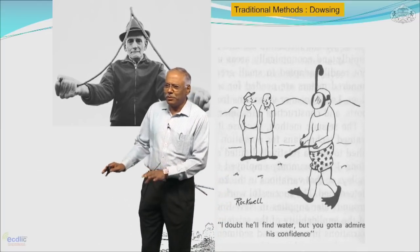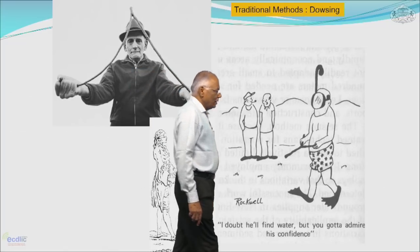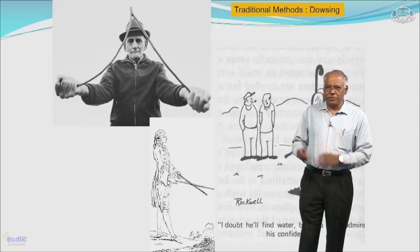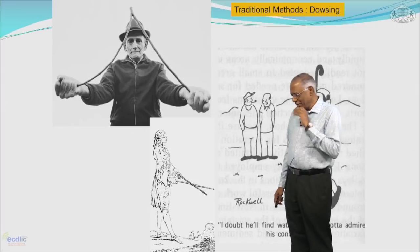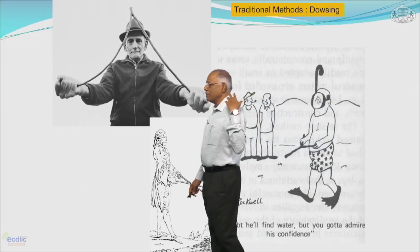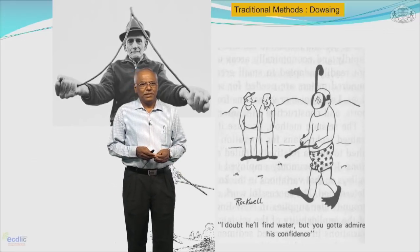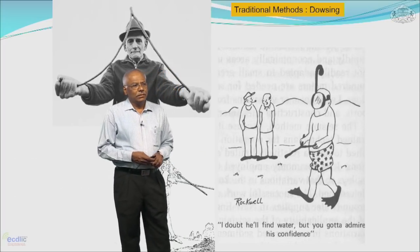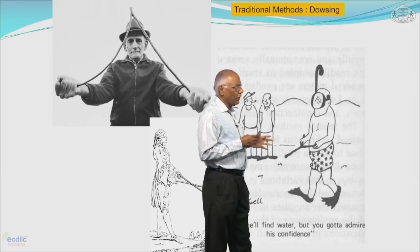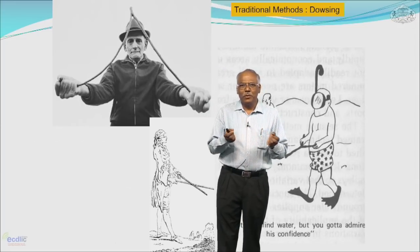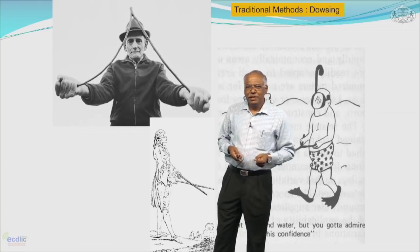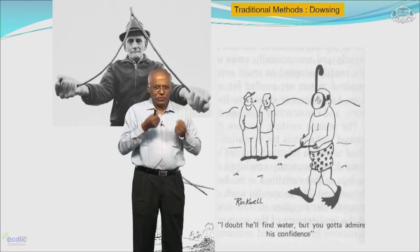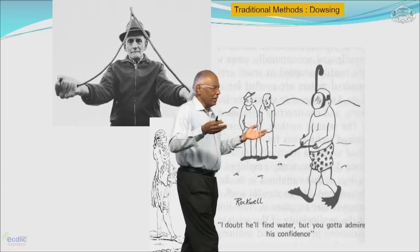If we go back and look into ancient times, ancient society was dependent on ground water resources apart from surface water. They had certain techniques which we call dowsing techniques. Persons used to search for ground water by taking a Y-shaped twig of a tree, hold it in the hand as you can see in the picture, and when that twig changes its direction from above to below, the person identifies the spot.